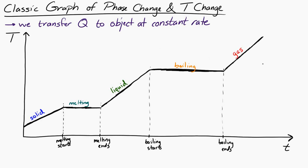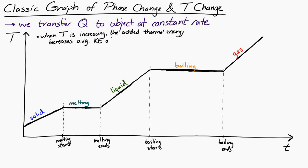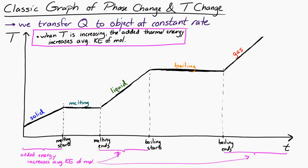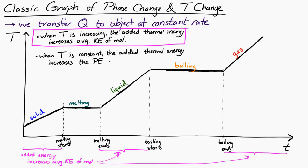During the parts where temperature is increasing, the added energy is going into increasing the average kinetic energy of the molecules — which is the same as increasing the temperature of the substance. During the parts where the temperature is constant, we're not increasing the average kinetic energy. Instead, we're increasing the potential energy associated with those intermolecular forces.